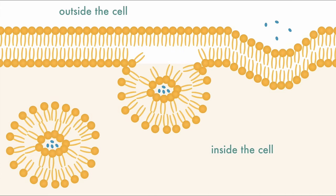A vesicle can merge with the cell membrane because they're both made of phospholipids. The layers press into each other, and the phospholipids rearrange a little so that they can open up their contents to the outside of the cell. Again, this requires energy, so it's classified as one of the types of active transport.